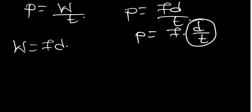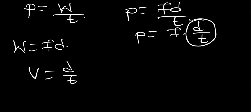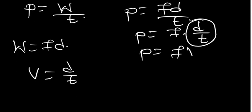Distance divided by time is velocity, because we know that velocity is distance divided by time. So I can replace that and say power equals force times velocity. This is another formula for power — if you have the force and the velocity, you can find the power.